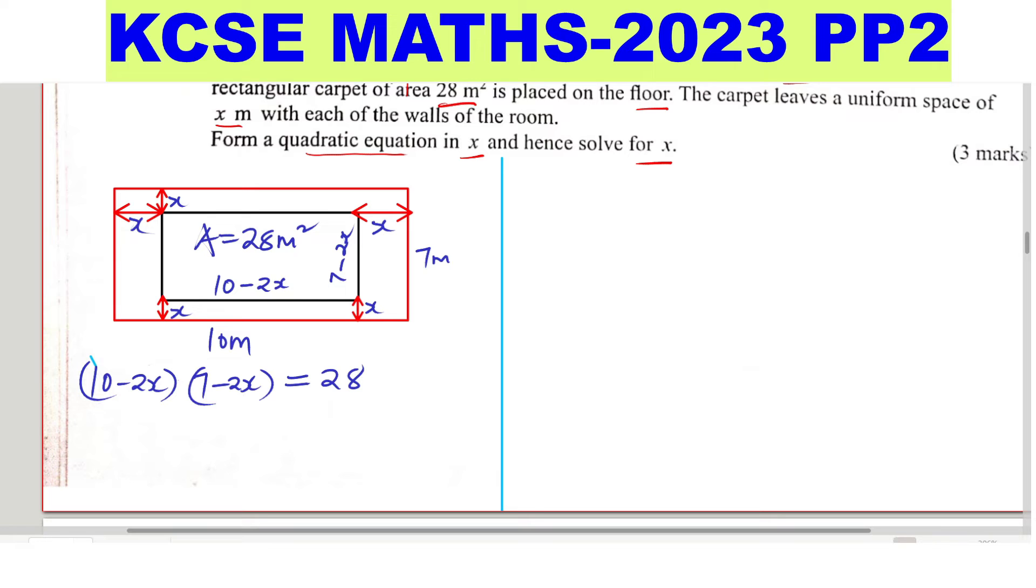So expand the left-hand side. This will be 10 times (7 minus 2x) minus 2x times (7 minus 2x) equals 28.